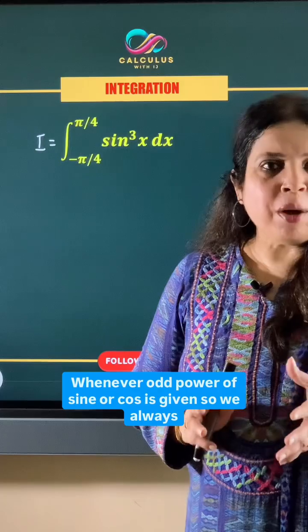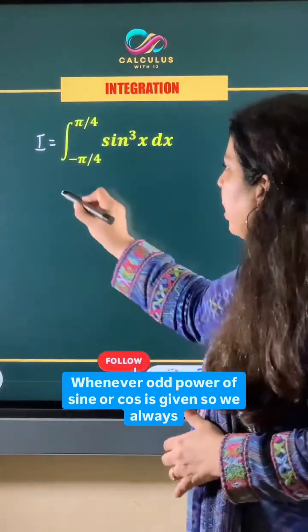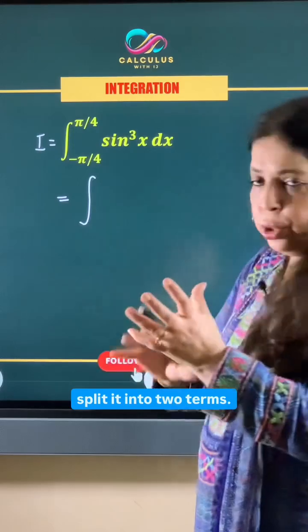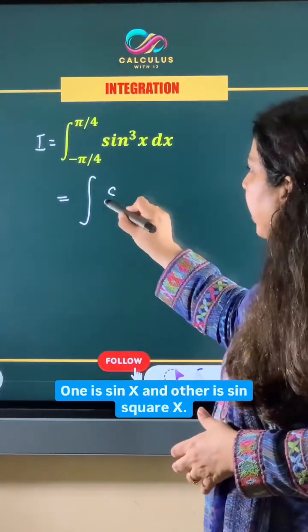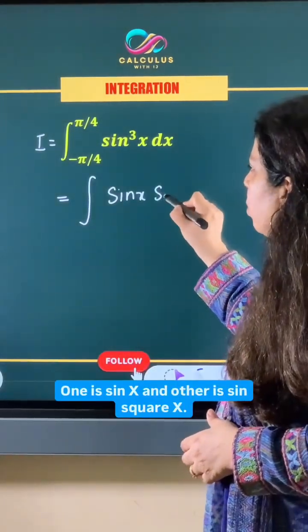Whenever odd power of sine or cosine is given, we always split it into two terms. One is sine x and the other is sine square x.